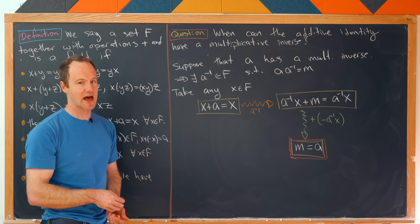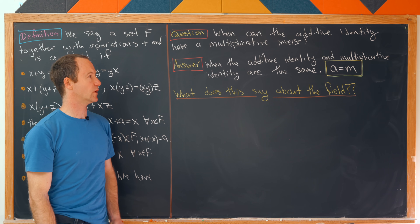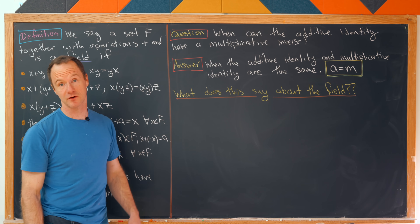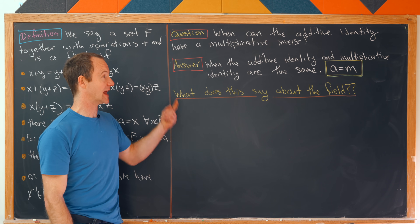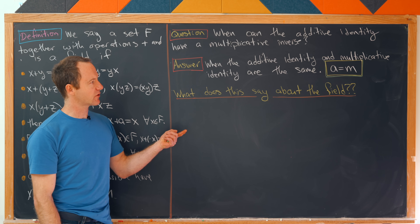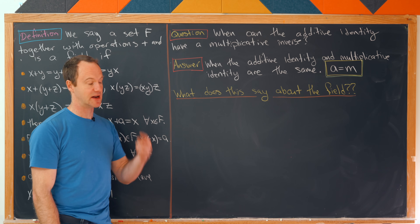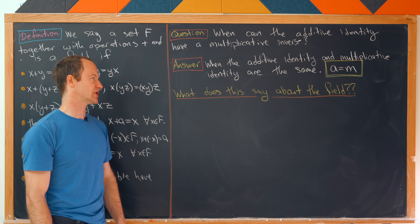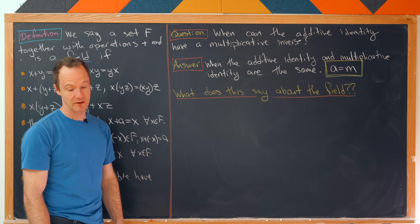Let's summarize. For our initial question — when can the additive identity have a multiplicative inverse — we have an answer: when the additive identity and the multiplicative identity are the same, i.e., a equals m. Recall we were using a as the additive identity and m as the multiplicative identity. Now we'd like to push a little further and see if that says anything special about the field.